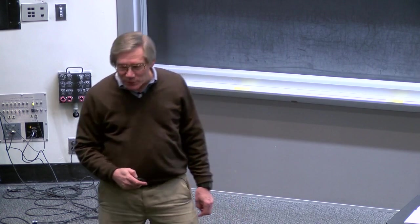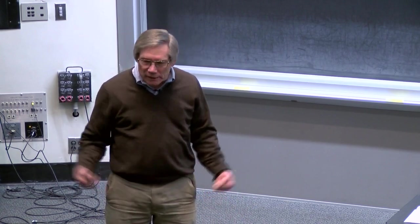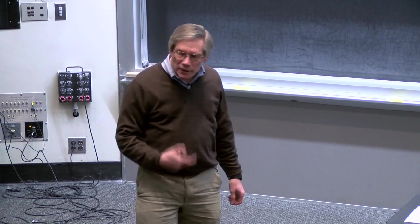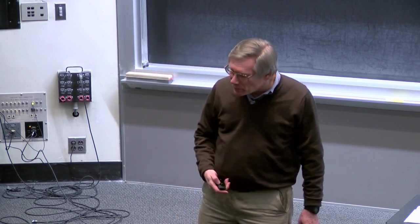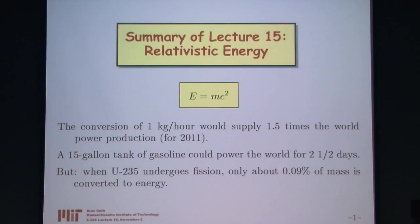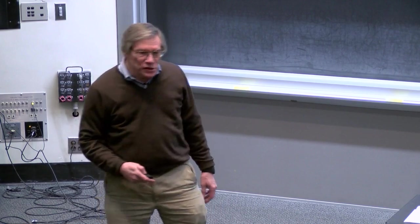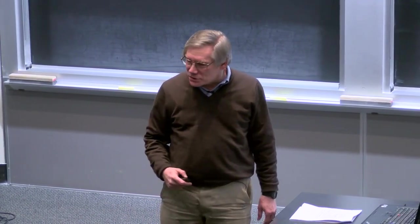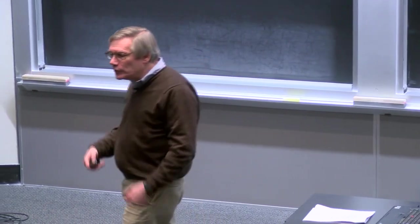The catch, of course, is that we can't convert matter into energy. We can't get around the problem that, at least at the energies we deal with, baryon number — the number of protons and neutrons — is conserved. So we can't make protons and neutrons disappear. One of the most efficient things we can do is fission uranium-235, but less than one tenth of one percent of the mass is actually converted into energy.